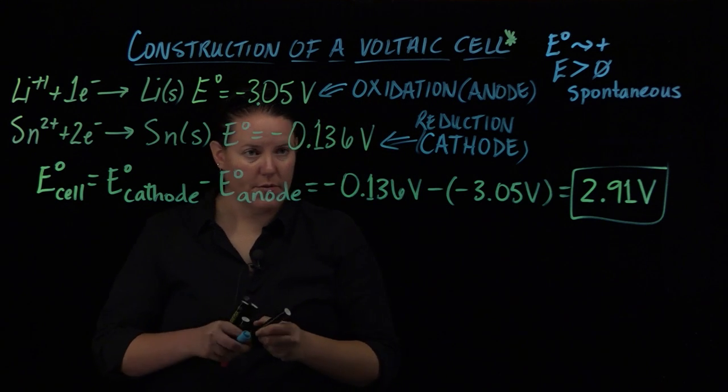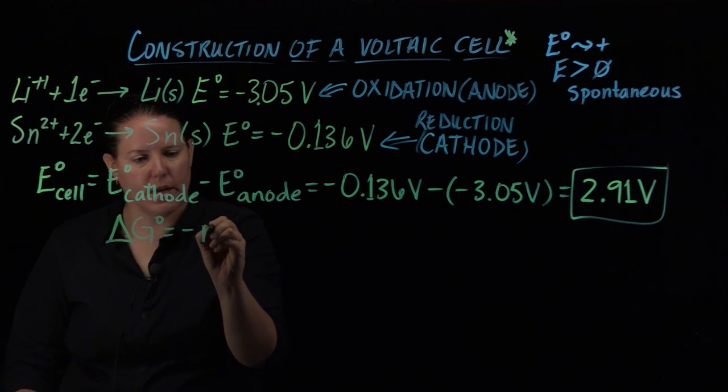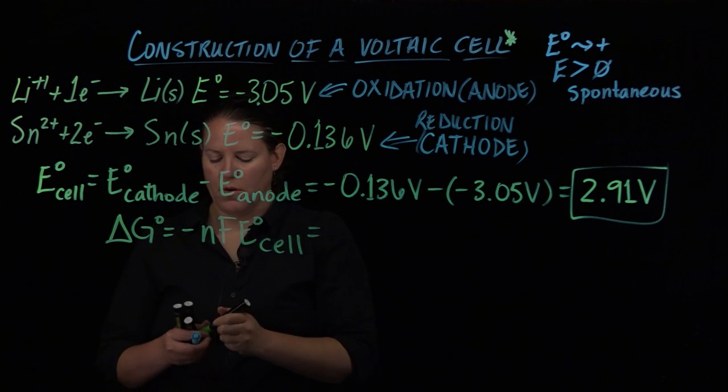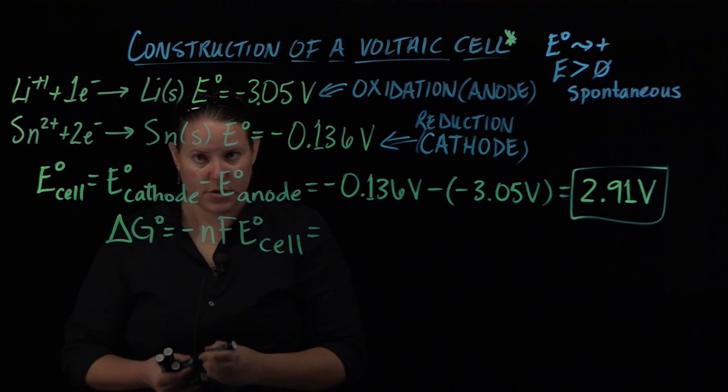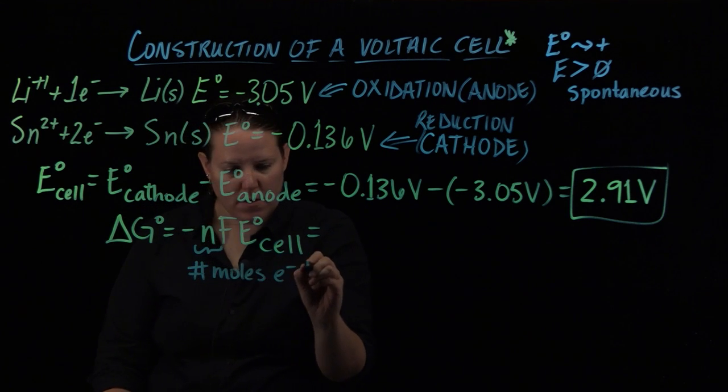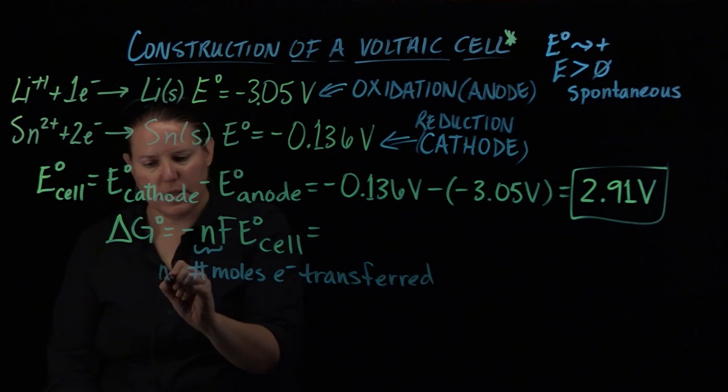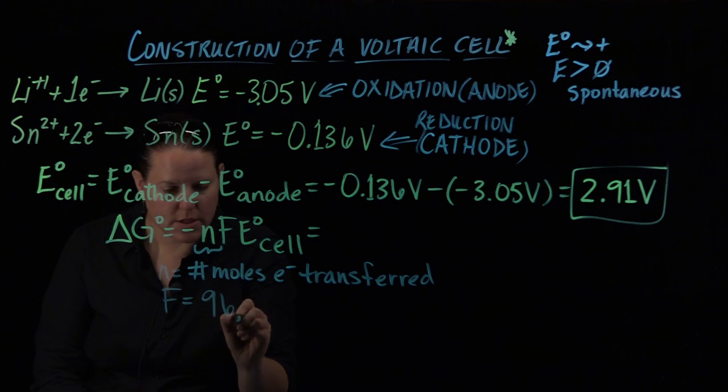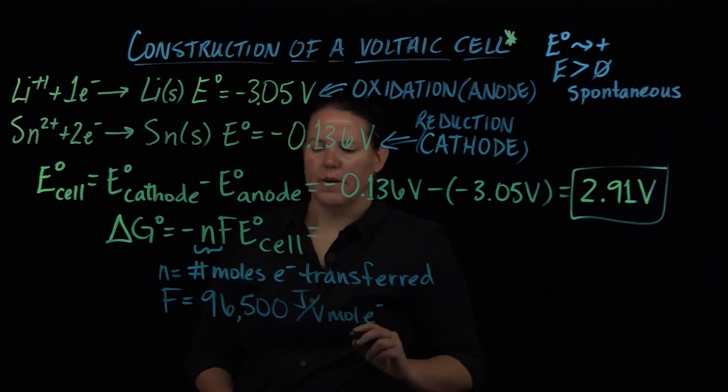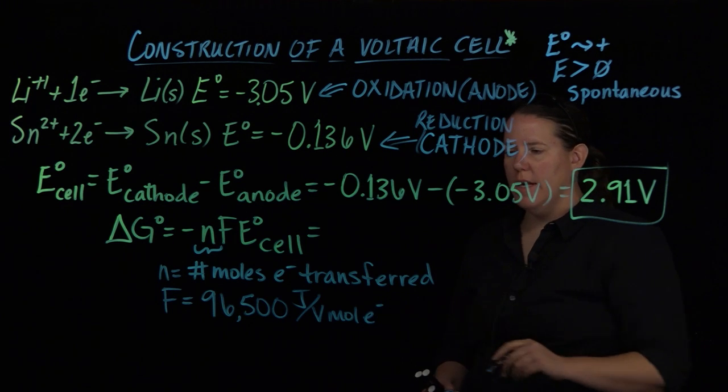We could also actually calculate quite a lot from this as well. We know that ΔG° is equal to negative nF E° cell, where n is the number of moles of electrons transferred. Now what's interesting here, n is the number of moles of electrons transferred, F is Faraday's constant. That's just a constant. That's 96,500 joules per volt mole electron, and n is the number of moles transferred.